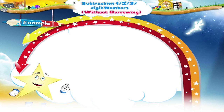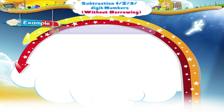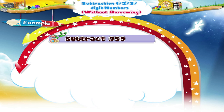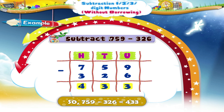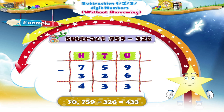Okay, let us go for the next example: 759 minus 306. 9 units minus 6 units equals 3 units. 5 tens minus 3 tens equals 2 tens. 7 hundreds minus 3 hundreds equals 4 hundreds. So the answer is 433. Very good!